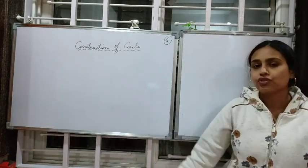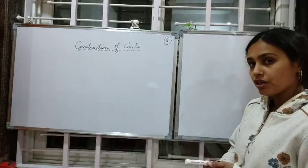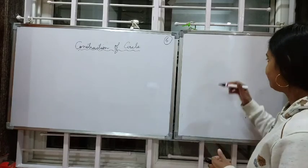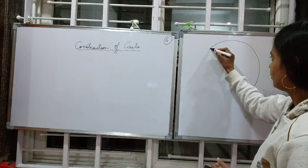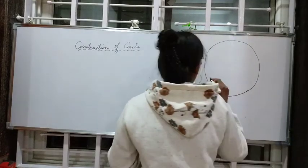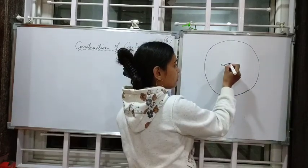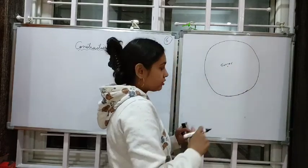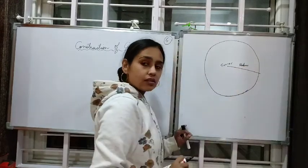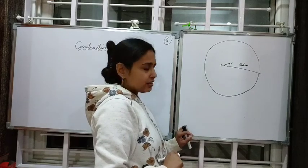Children, we are going to study the construction of a circle. Before that, we should know what is a circle. A circle is a round shaped figure which is equidistant from a particular point. That point is known as the center of the circle, and that equal distance is known as the radius of the circle. These are two very important terms about the circle.